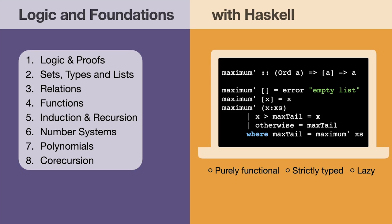Then in the third line we're saying maximum prime of square brackets x is equal to x. This will pattern match a list with a single element x in it. So if we have a list which just has a single element in it well then that single element will be its maximum so we just return that single element.